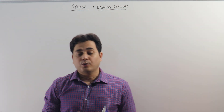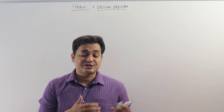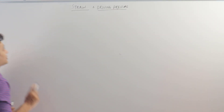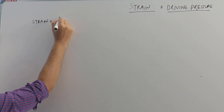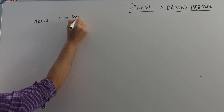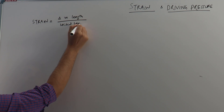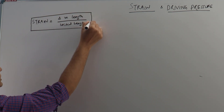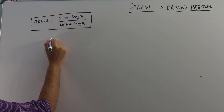If you remember from our pre-medical times when we were reading physics, especially elasticity and spring mechanics, there was this concept: strain is equal to change in length divided by initial length. That formula we used in pre-medical physics, especially spring mechanics. The same concept we can use here in the case of lung mechanics.